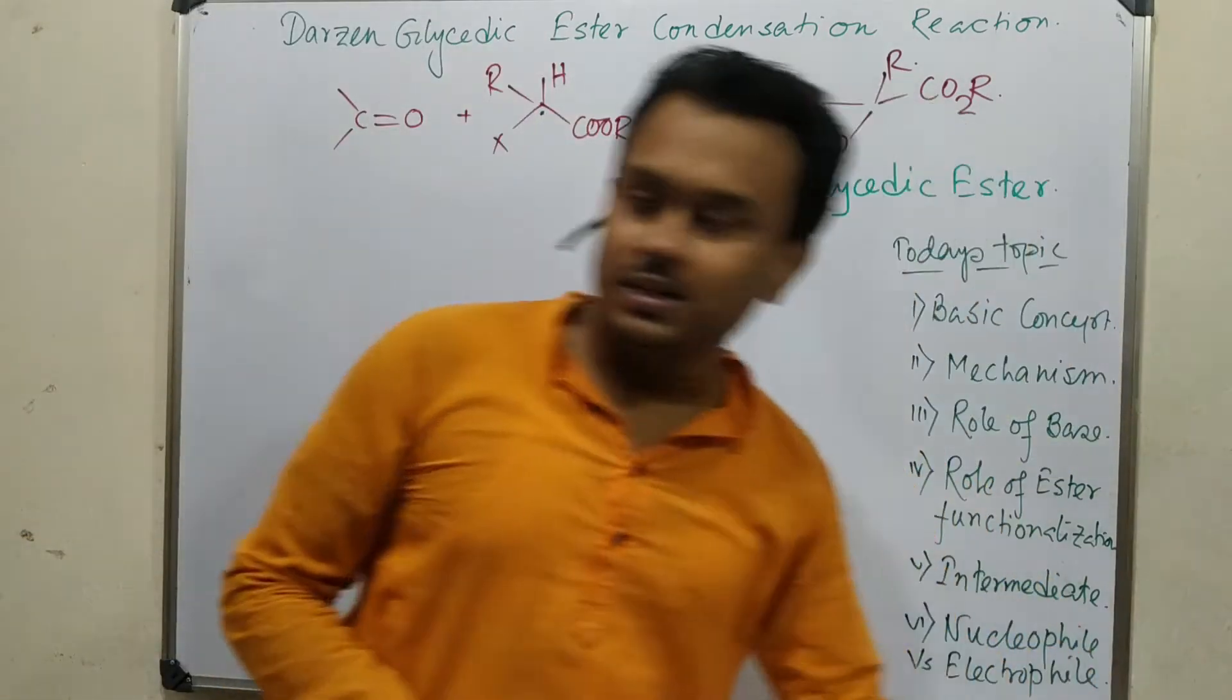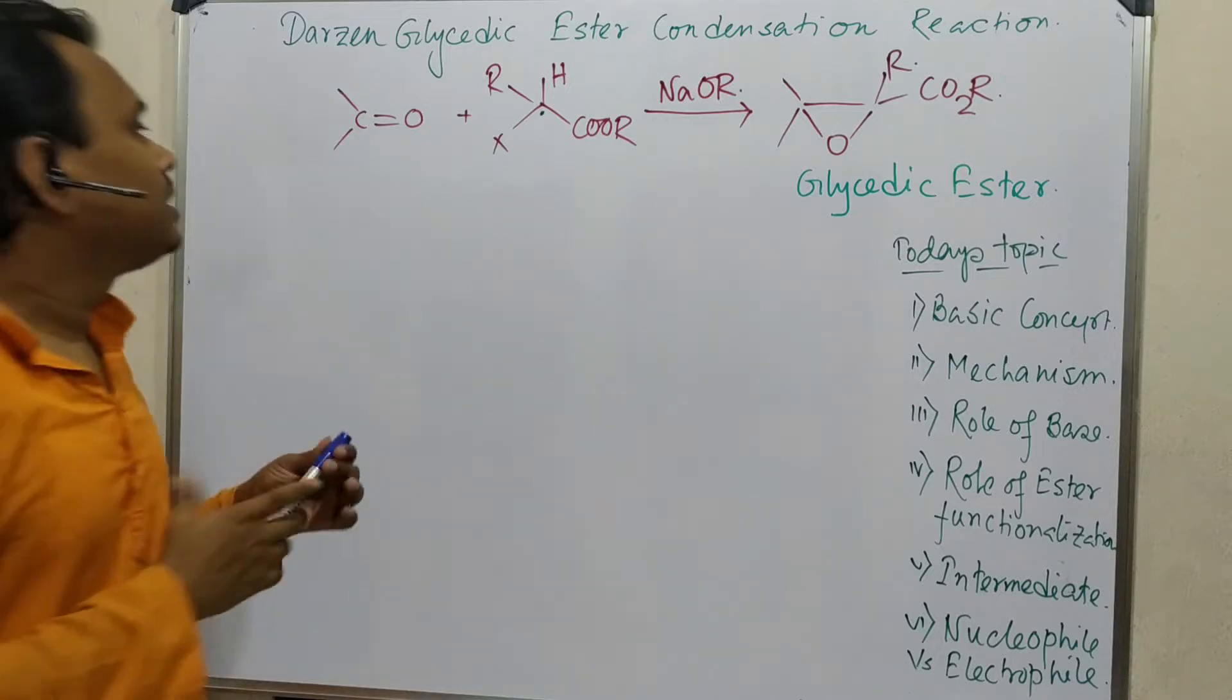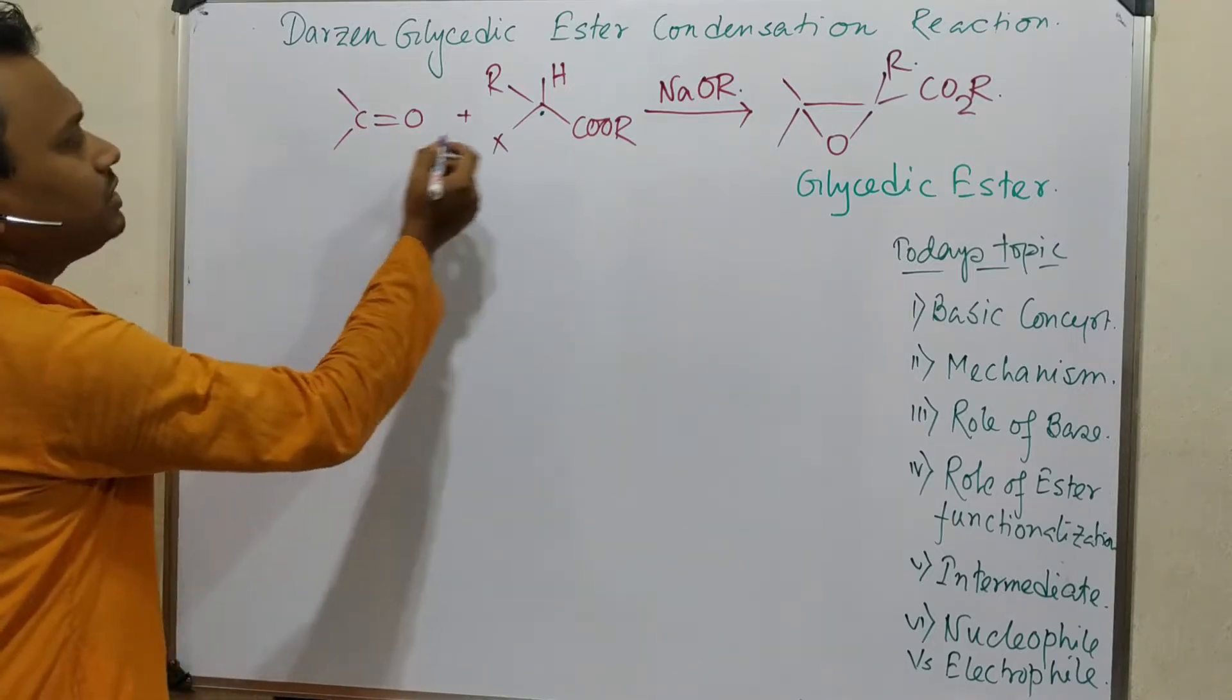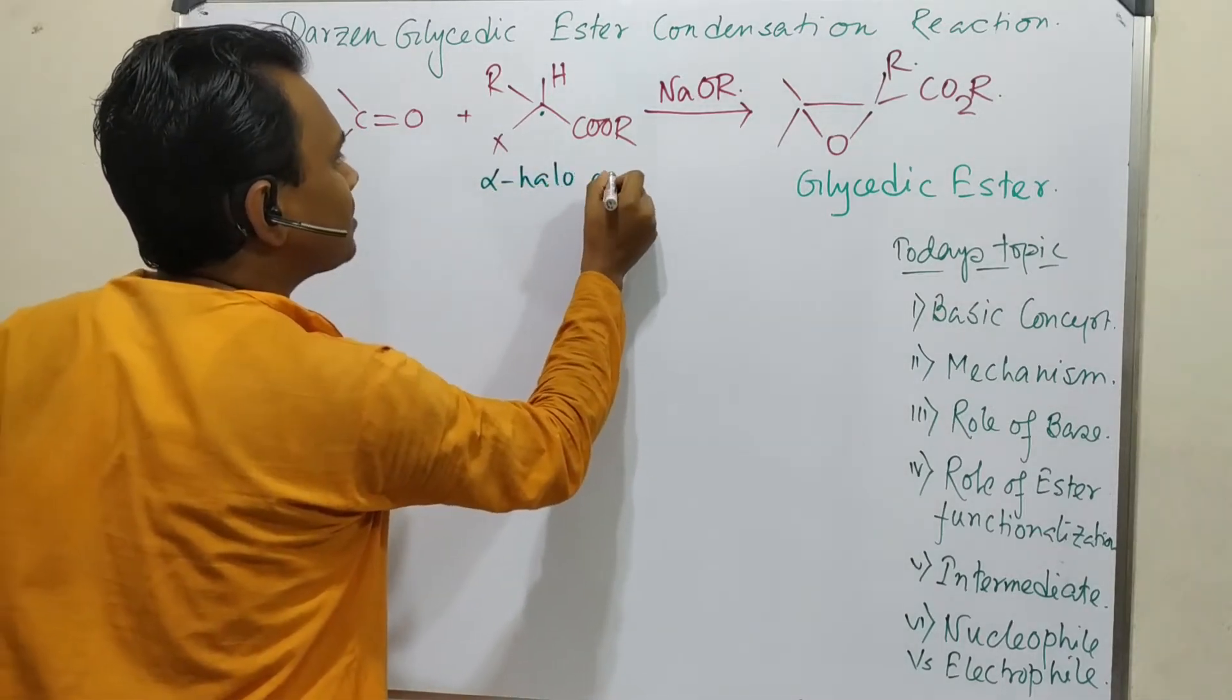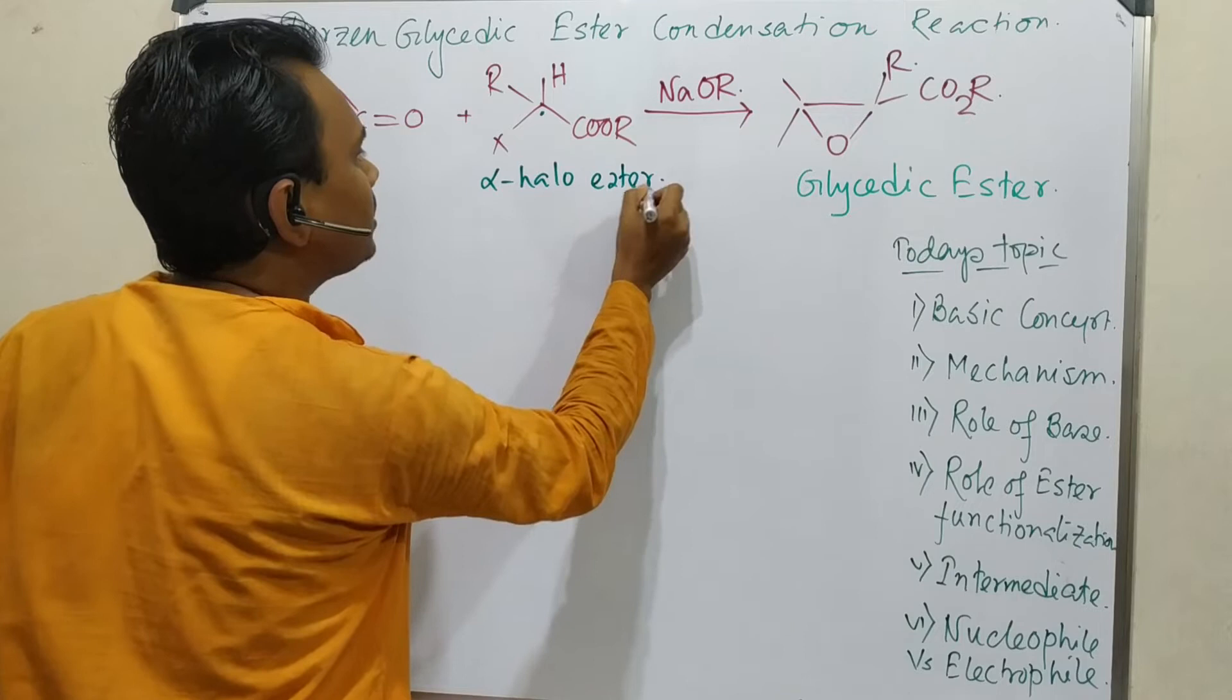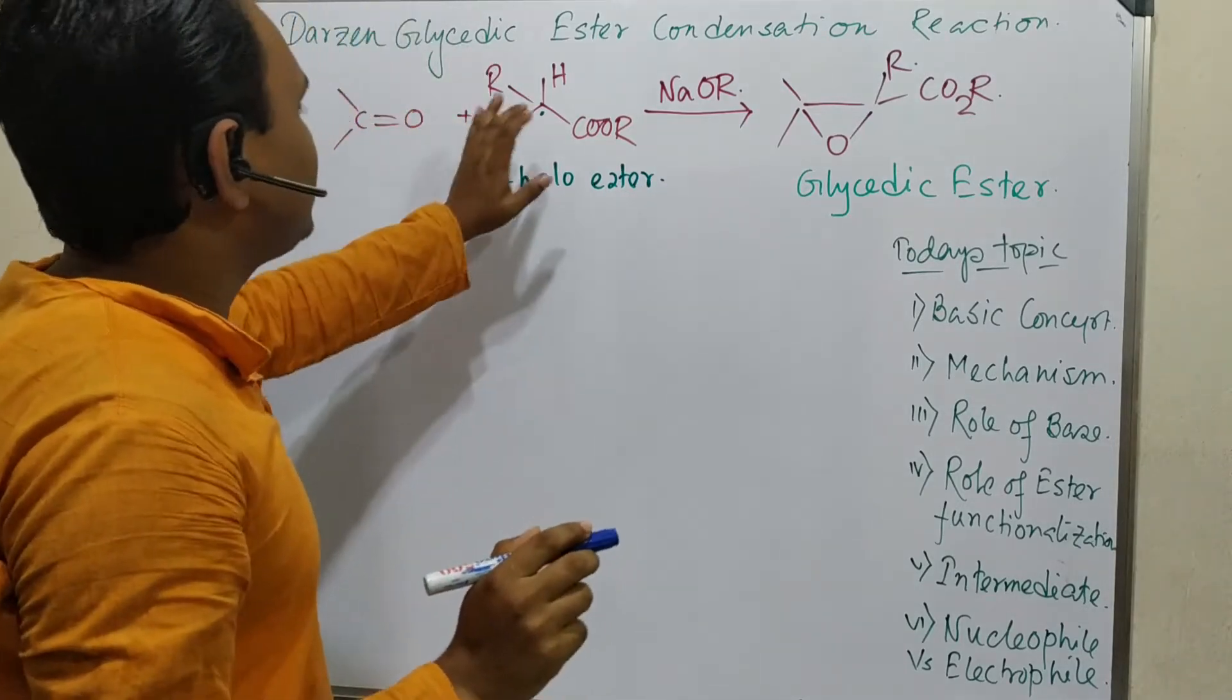So let's start. As you can see, this reaction is nothing but the reaction between a ketone with alpha-halo ester. You can find some similarity with Claisen ester condensation.